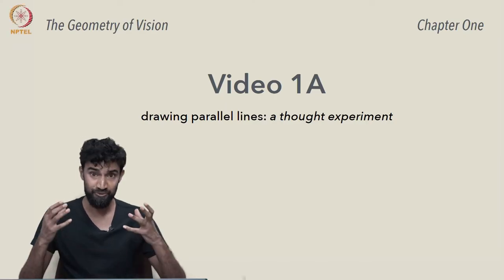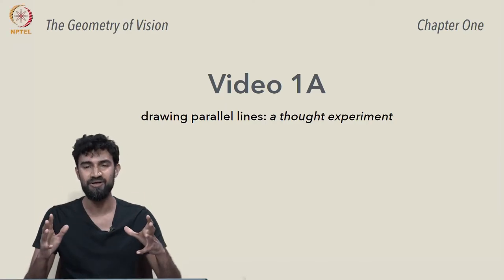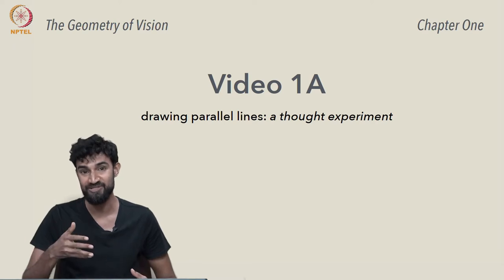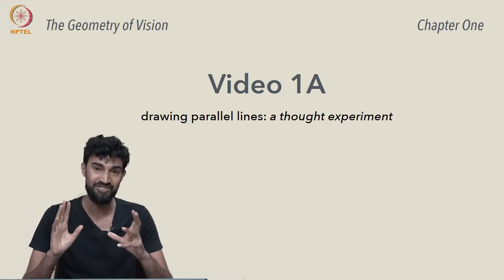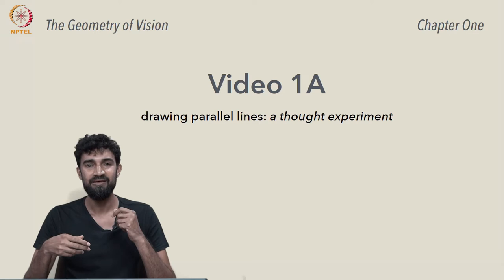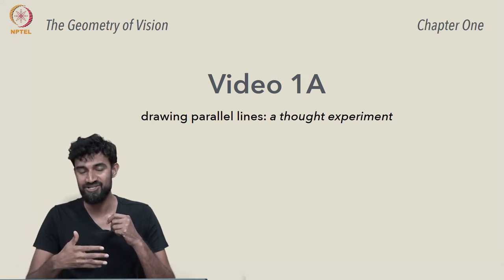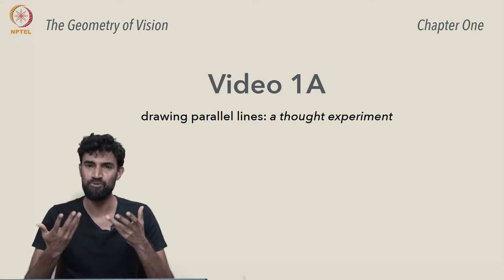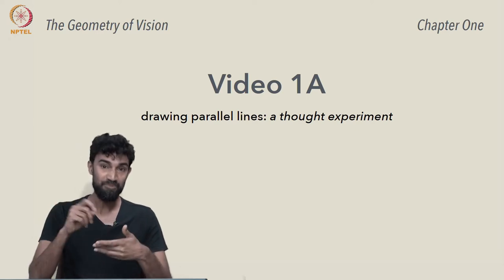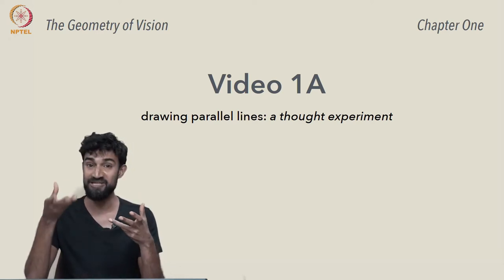We've seen how when you view a scene around you, you're creating a two-dimensional representation of a three-dimensional space. That two-dimensional representation could be a photograph, a perspective drawing, or just the image in your head.